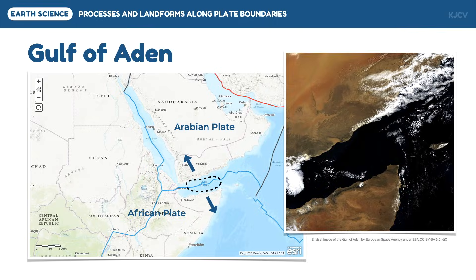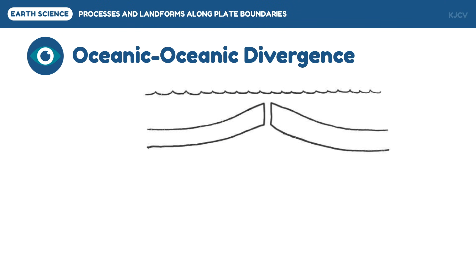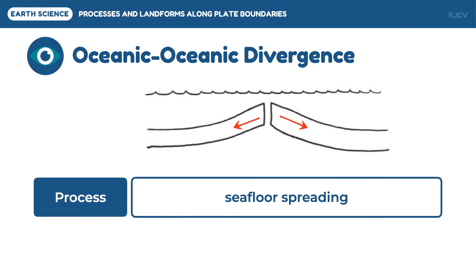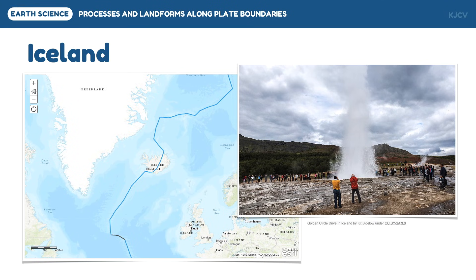The second divergent boundary involves oceanic crusts. In this type of divergent boundary, crust is formed in the spreading center, which allows seafloor spreading to happen. It creates mid-ocean ridges which are volcanic in nature since new crust is formed by the release of magma. An example of this process is the splitting of Iceland. Iceland is found on top of the Mid-Atlantic Ridge, which is responsible for splitting Laurasia into North America and Eurasia, and Gondwana into Africa and South America.